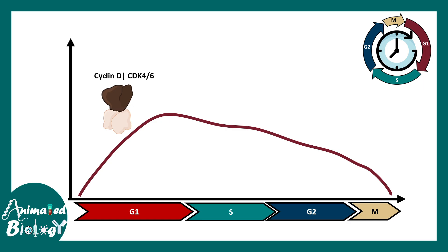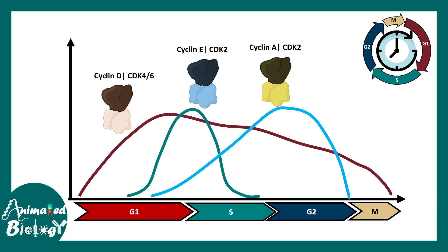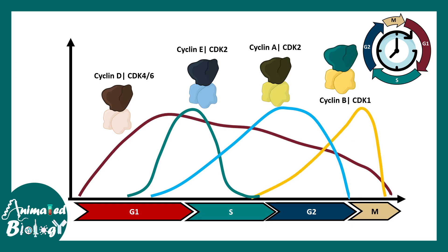Let's look at the cyclin-CDK complexes active in different stages of the cell cycle. In G1 phase the most active complex is cyclin D with CDK4-6. In S phase, cyclin E and CDK2 are active. At the end of S phase, cyclin A and CDK2 complexes are active, and in M phase the key complex is cyclin B with CDK1. The most important cyclins to focus on are cyclin D, cyclin E, and cyclin B.